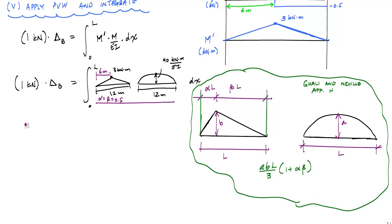I'll have 1 kilonewton times delta B is equal to A, B, L over 3. And in this case, A would be 90 kilonewton meter over EI times B, which is 3 kilonewton meters, times the length of 12 meters, all divided by 3, times 1 plus 0.5 times 0.5. And if I work this out,